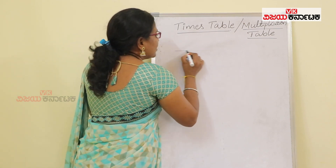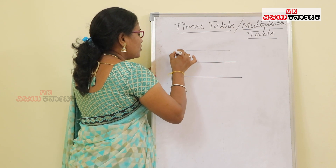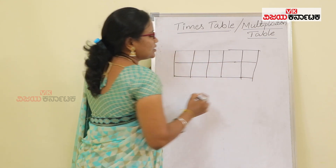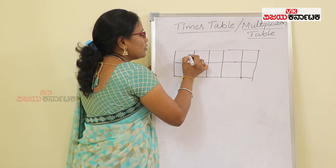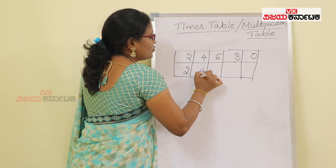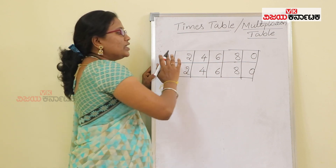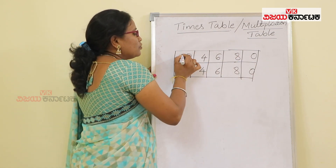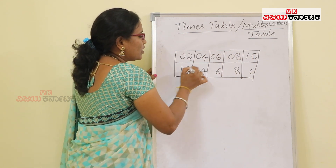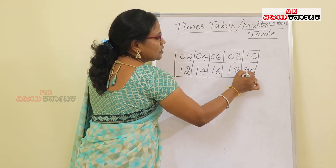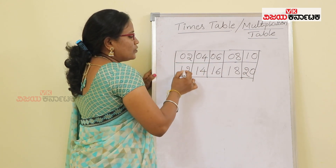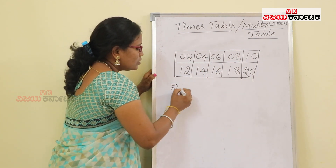So I will start with the 2 times table. You need to divide by 2 rows. The pattern is 2, 4, 6, 8, 0 — and repeat the same: 2, 4, 6, 8, 0. In this row, the digits go 0, 0, 0, 0, then 1, 1, 1, 1, 1, 1, then 2. The full sequence is 2, 4, 6, 8, 10, 12, 14, 16, 18, 20. This is your 2 times table.